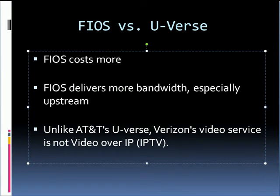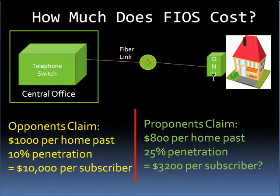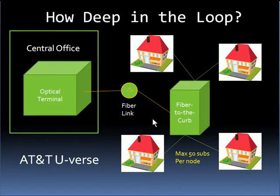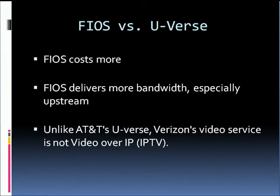In comparing Verizon's FIOS to AT&T's U-Verse, we note that FIOS costs more, particularly because the terminal that terminates the fiber is one per subscriber, whereas in the AT&T U-Verse system the fiber terminal is shared among multiple homes, often as many as 50. However, in return for this additional cost, the reduction in length of the copper loop allows the FIOS system to deliver more bandwidth, especially upstream, per customer. Although not discussed further in this tutorial, AT&T's U-Verse system uses IPTV for TV transmission versus Verizon's video service, which is passband.